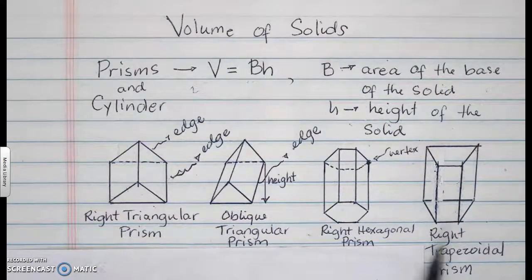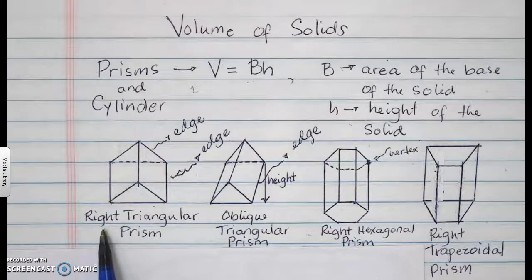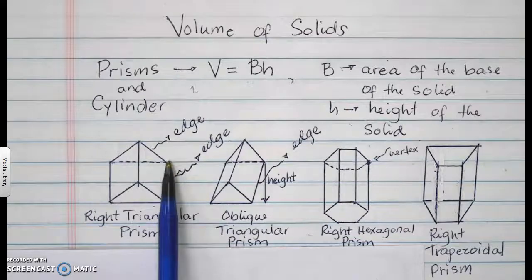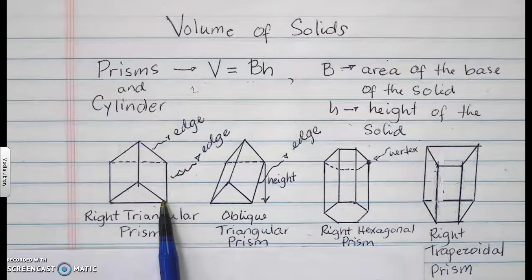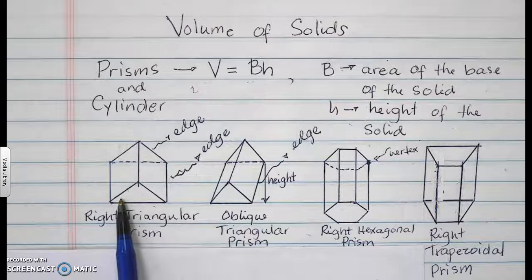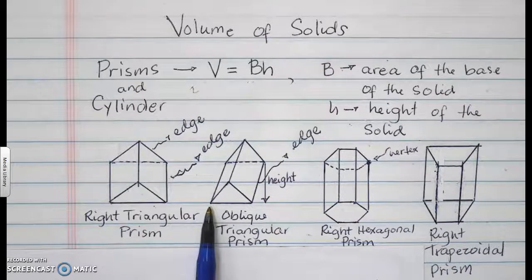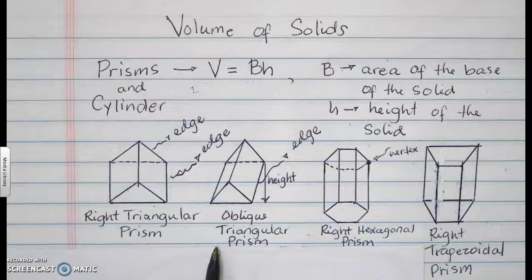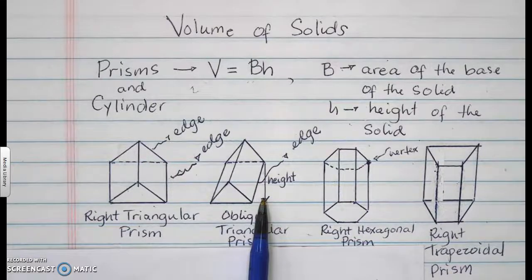Let's look at all the examples over here. This first one is called a right triangular prism, because the edges are perpendicular to the triangular base. This right here is not. Therefore, it is called an oblique triangular prism, where the altitude or the height of this prism will be found outside, like so.